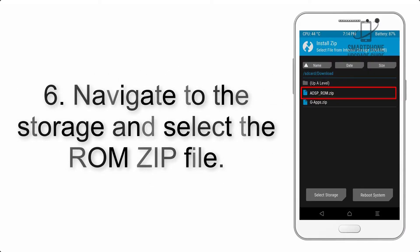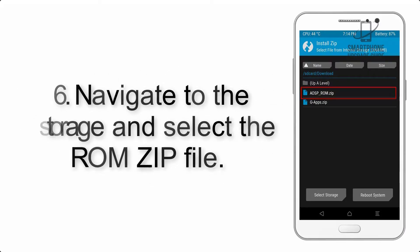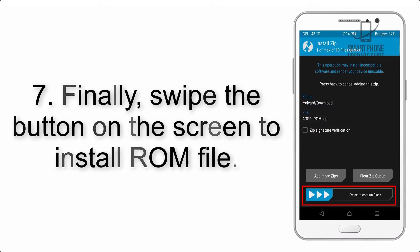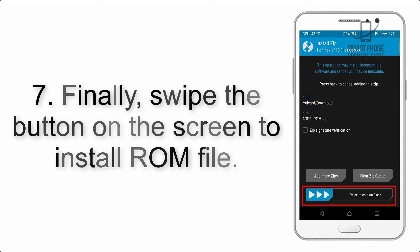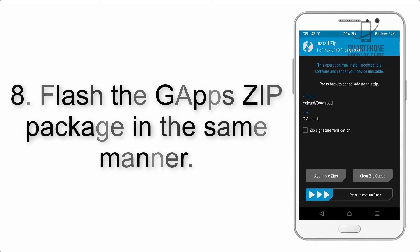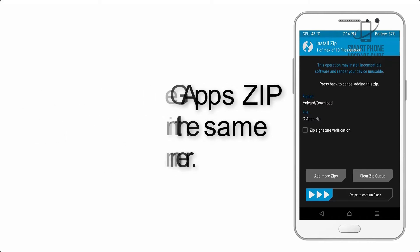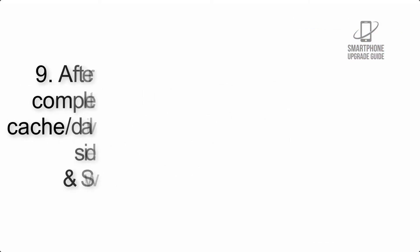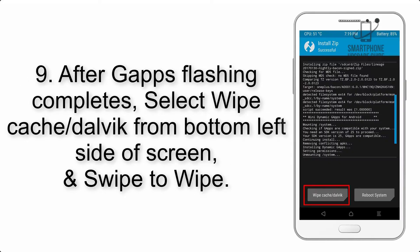Step 5: Go back to the recovery main screen and tap on the Install button. Step 6: Navigate to the storage and select the ROM zip file. Step 7: Finally, swipe the button on the screen to install the ROM file.